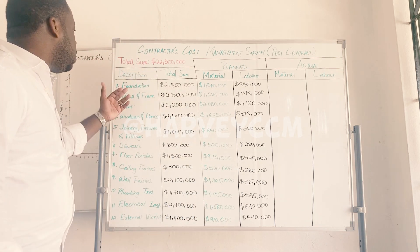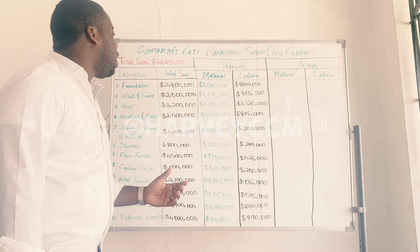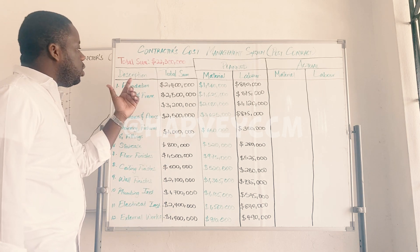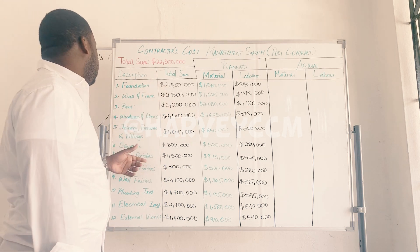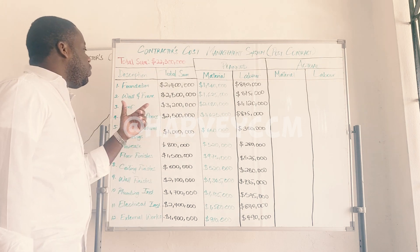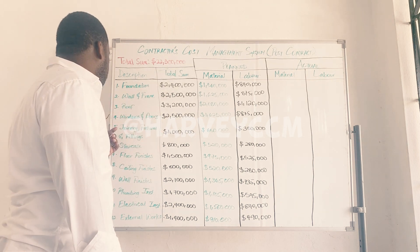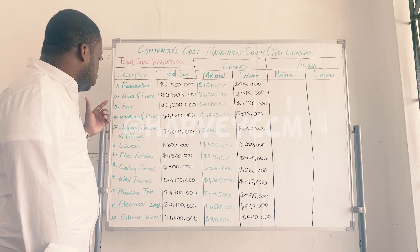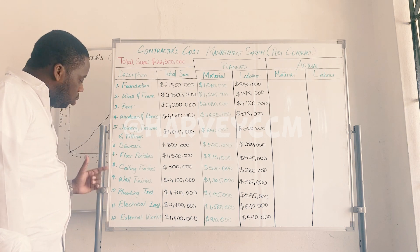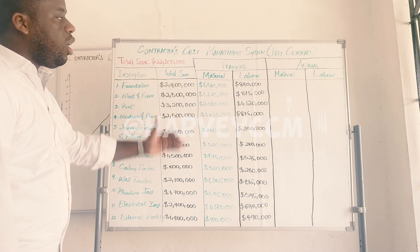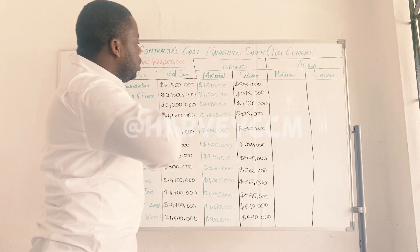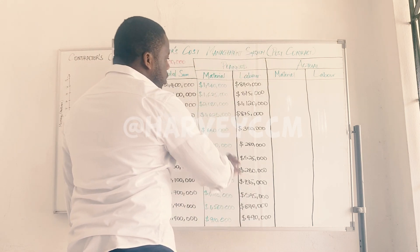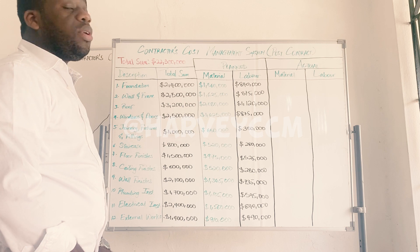You go through and list the construction work elements: foundation — $2.4 million; wall and frame — $2.5 million; roofing — $3.2 million; windows and doors — $2.5 million; sanitary fittings and fixtures — $1 million; stairs, floors, ceiling, wall finish, plumbing, electrical, and external works. You have all these figures, and you break them out with material and labour for these different headings.